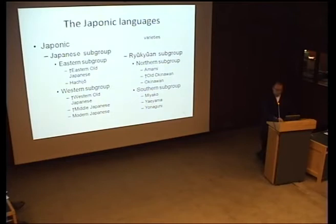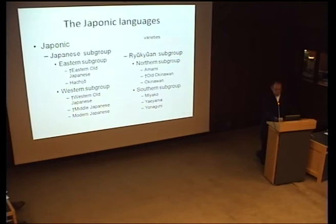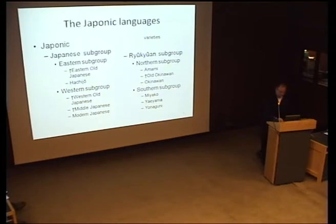A very brief tree overview. The Japonic languages are, by most count, five modern languages: Hachijo, Japanese, Amami, Okinawan, Miyako, Yaeyama, and Yonaguni. I've also included a few extinct languages marked with daggers that I will talk about at some point.